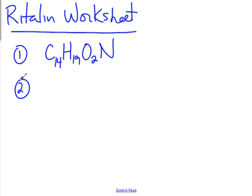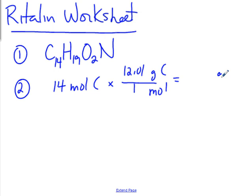Question two says find the molar mass and show your work. So do this in this way. There's 14 moles of carbon in 1 mole of Ritalin. Using the molar mass, we can get rid of moles and switch to grams of carbon. 12.01 grams for every mole. Pause the video and do the same thing for hydrogen, oxygen, and nitrogen.